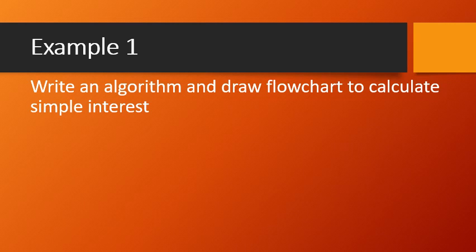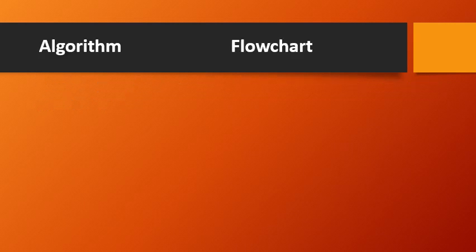Now let us write the algorithm for simple interest. The first step is Start. The second step is for input operations — we need P, T, and R to calculate simple interest. So step 2 will be: Input P, T, R — where P denotes the price, T denotes the time, and R denotes the rate of interest.